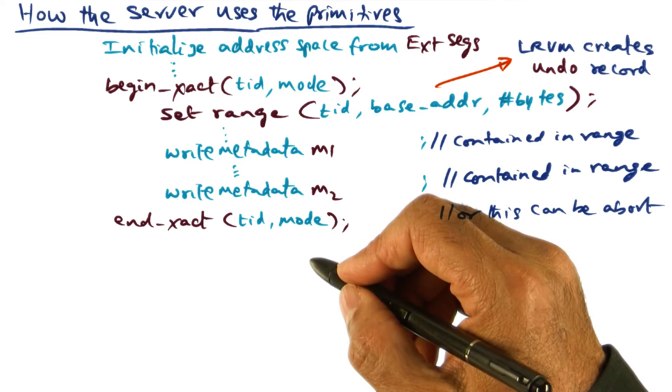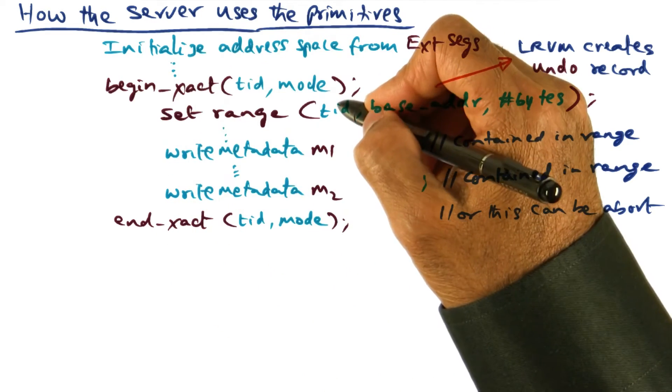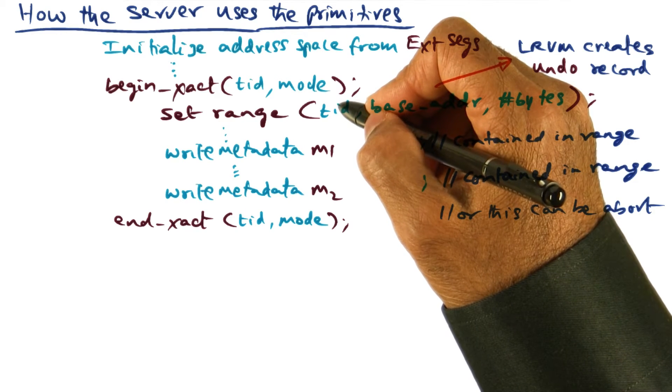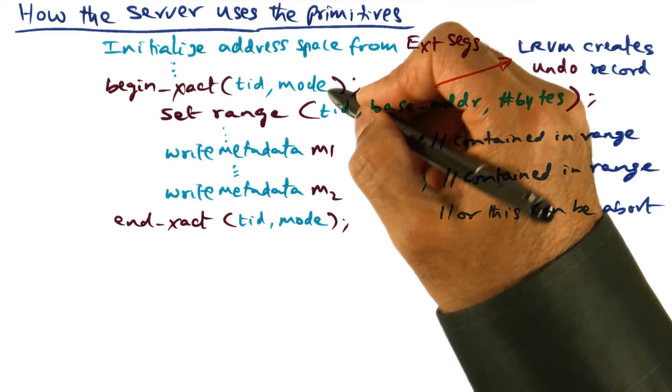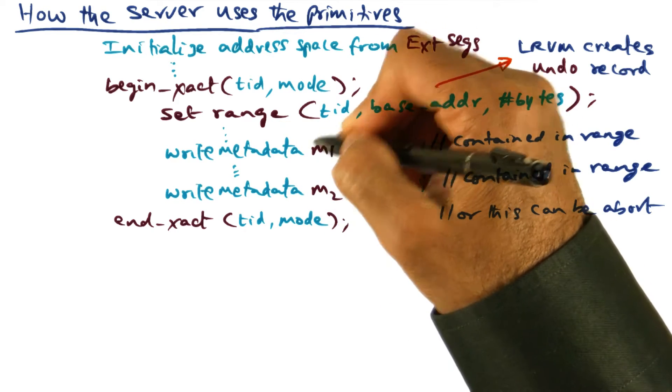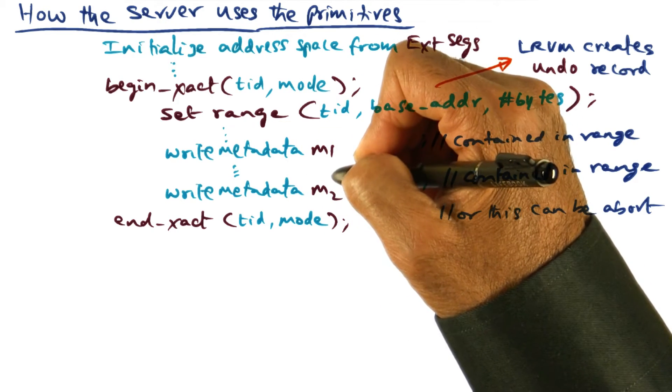And it is possible that this transaction which is beginning now may commit or abort. If in fact it aborts, then I have to make sure that all the changes that are made to persistent data structures are thrown away at the point of abort.